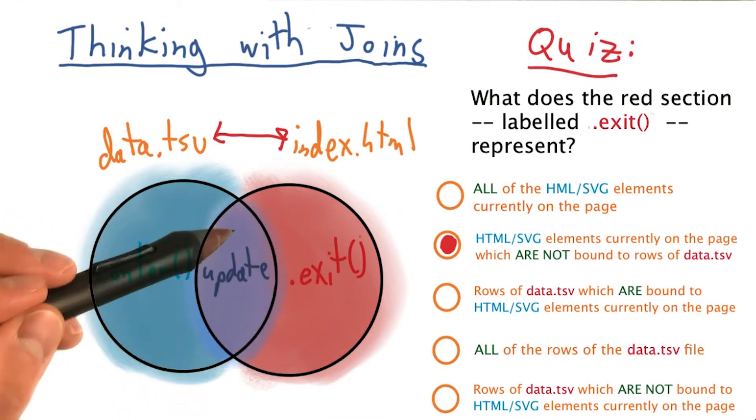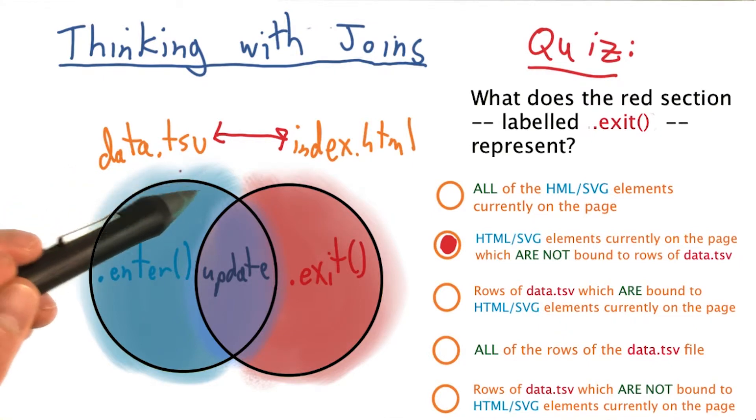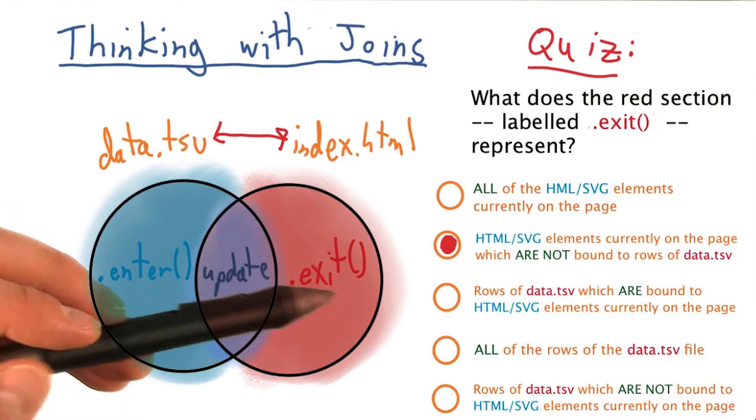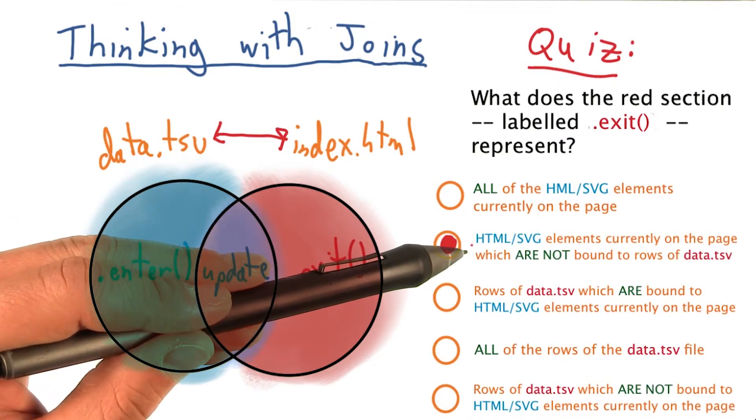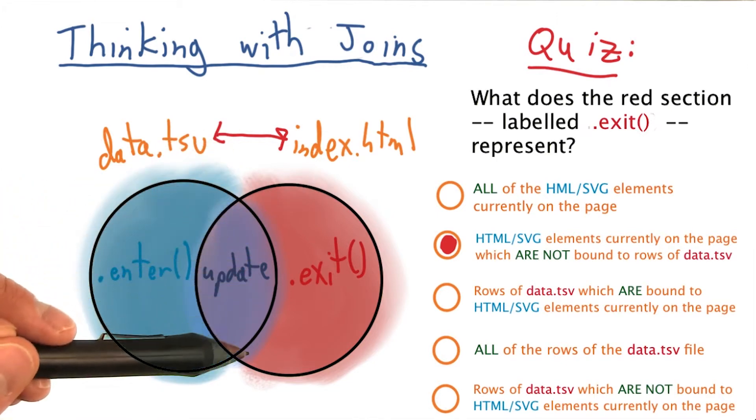So rather, every part of the right circle, which represents elements currently on our page, which don't overlap with anything in the left circle, which corresponds to rows of data, simply leaves us HTML or SVG elements currently on the page which are not bound to rows of our data.